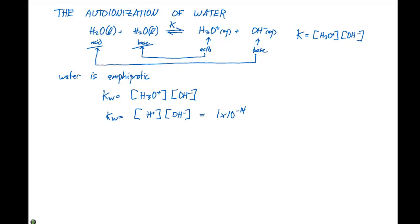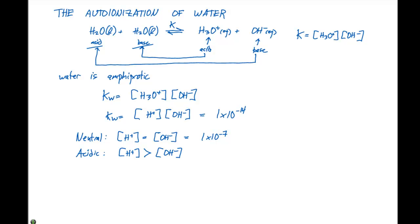So this is our KW expression, which will allow us to compare the strengths of acids and bases. In a neutral solution, the concentration of H+ equals the concentration of OH−, and both are 1.0×10⁻⁷. In an acidic solution, the concentration of H+ is greater than the concentration of OH−. KW allows us to calculate [H+] when we know [OH−], or vice versa.